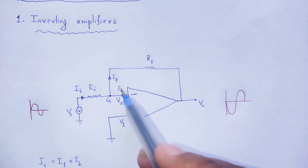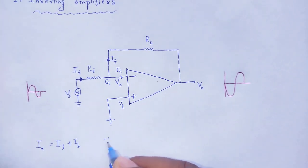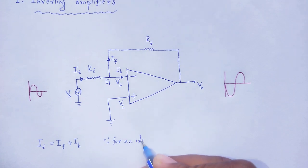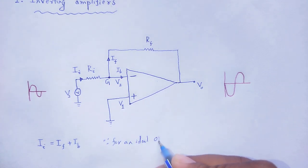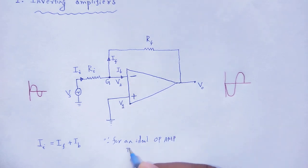So Ib will be zero for an ideal op-amp. Ib is equal to zero.